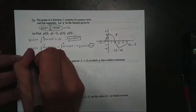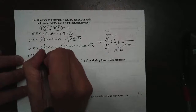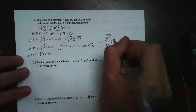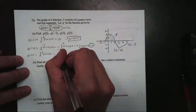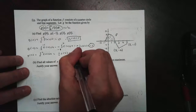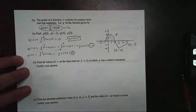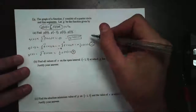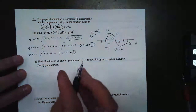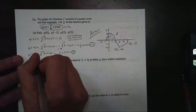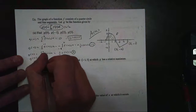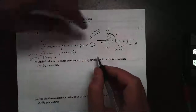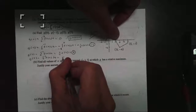To get g of 2, I look at the shape from 0 to 2 of f of t dt. That's our quarter circle — 1/4 times π times radius squared, where the radius is 2. So that's 1/4 times π times 4, which gives us π. So g of 2 equals π. To get g of 5, from 0 to 2 I already have pi.